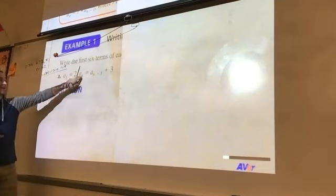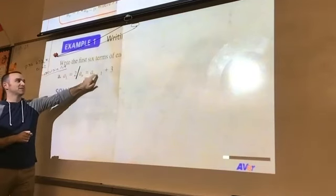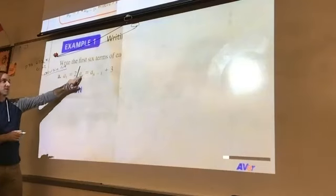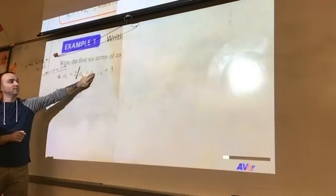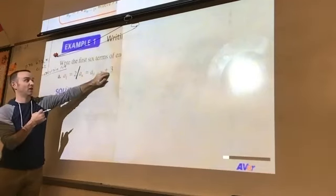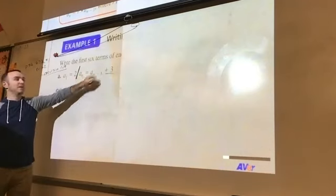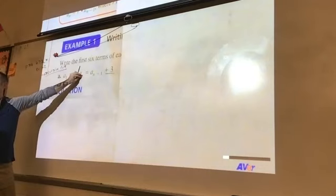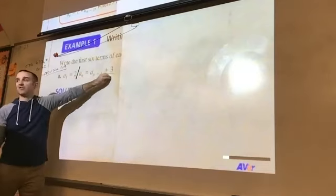We've seen a sub n — that's the nth term. A sub n minus one just means this is the term before this one. So to find any term, you're going to take the term before it and add three. That means we take a term, we add three, and that gives us our next term. So what type of sequence is this? Arithmetic — because we're adding the same thing every time.